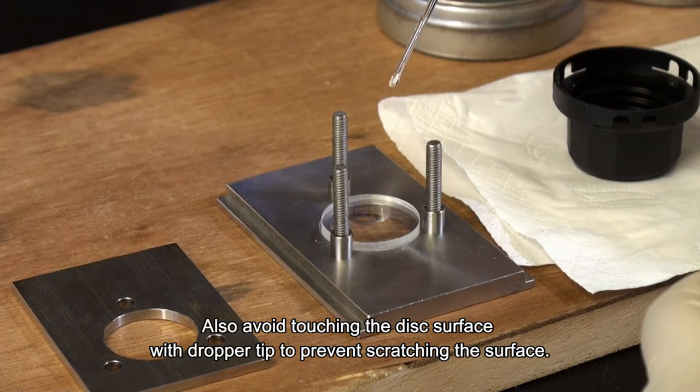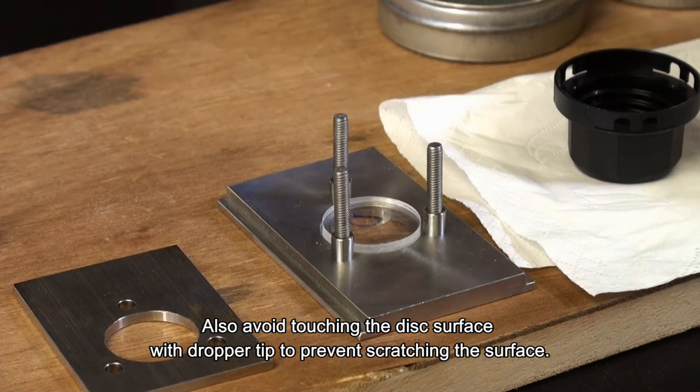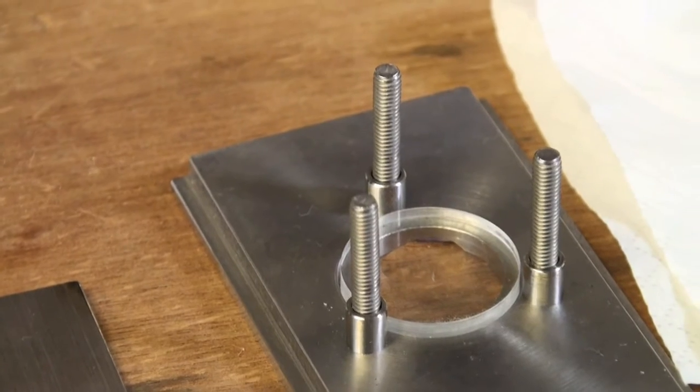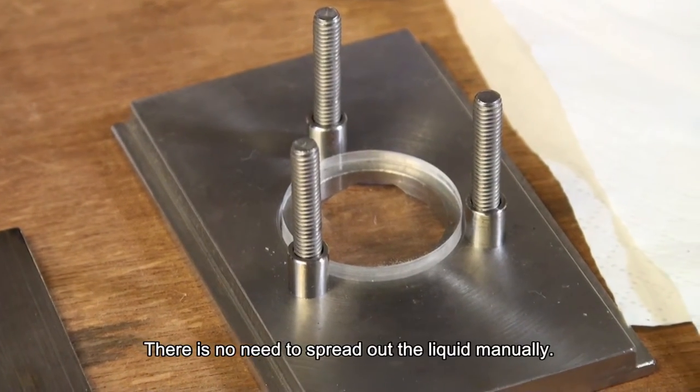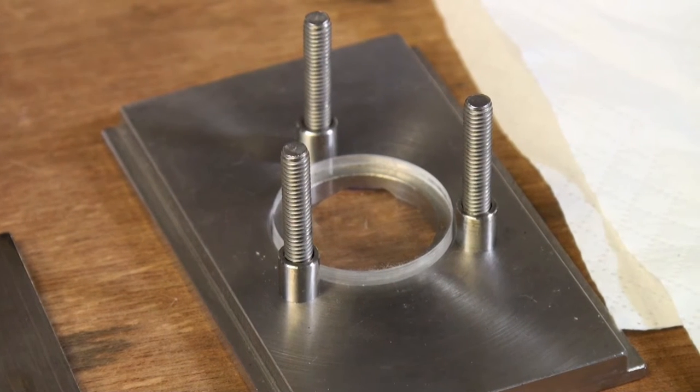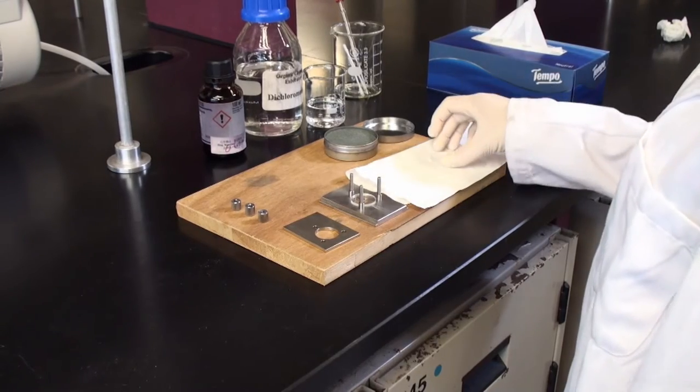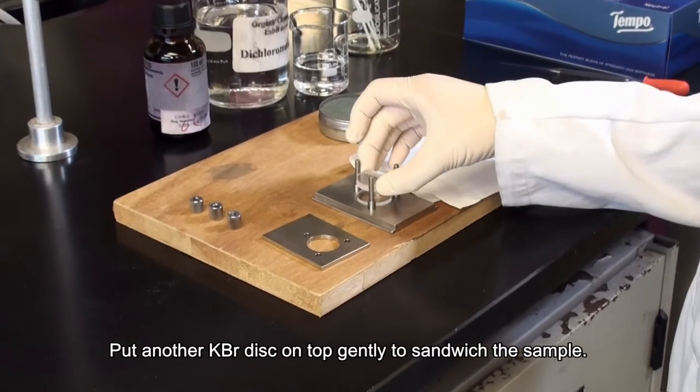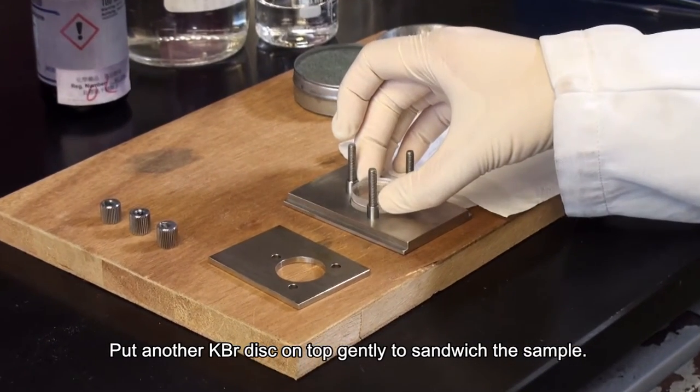Also, avoid touching the disk surface with the dropper tube to prevent scratching the surface. There is no need to spread out the liquid manually. Put another KBr disk on top gently to sandwich the sample.